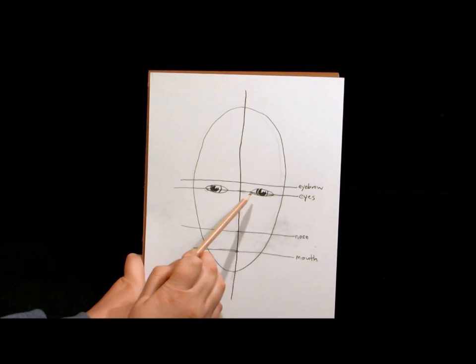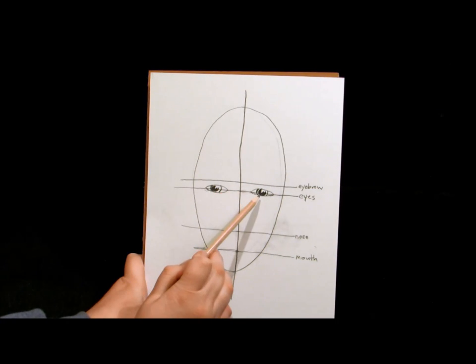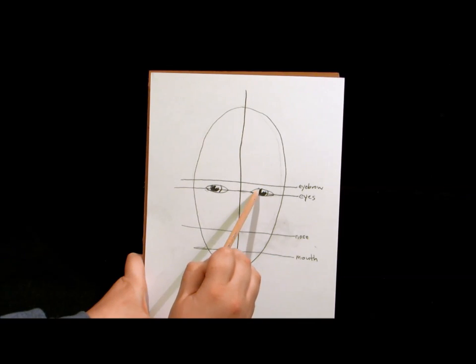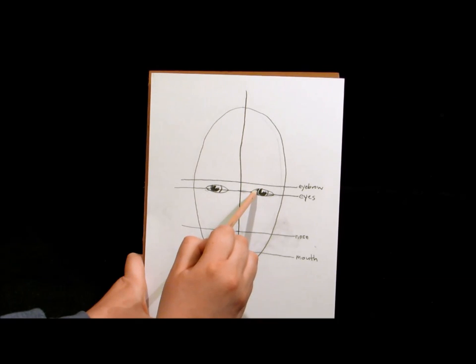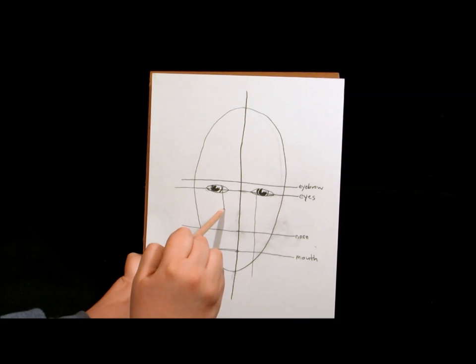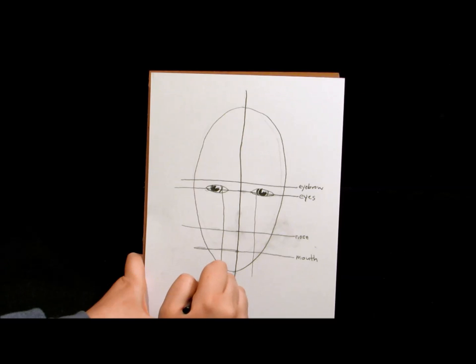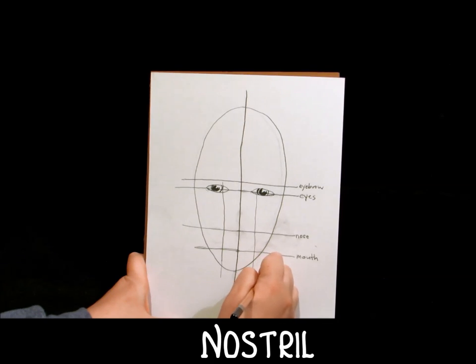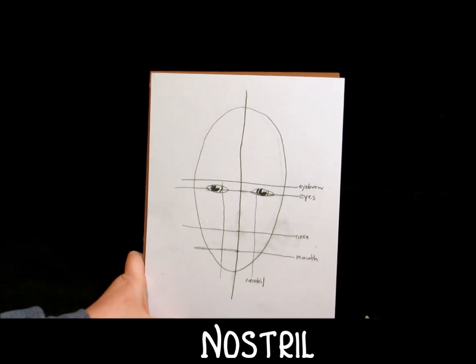Now, we're going to actually take that iris, the outer edge right there, and we're going to draw another line from there, straight down. Do it on the other side too, straight down. Now, this line drawn from the iris down will actually be the edge of the nostril.